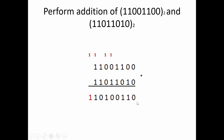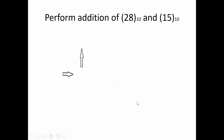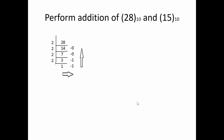The answer is 110100110. This is binary addition. Now if binary numbers are given as decimals — for example, add 28 and 15 — how do we perform binary addition?